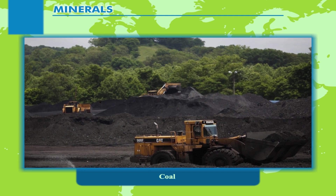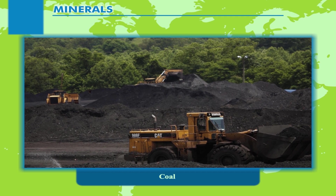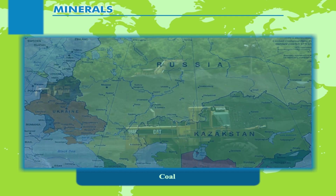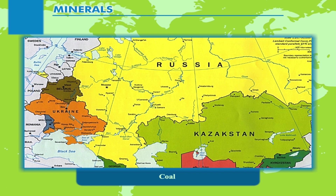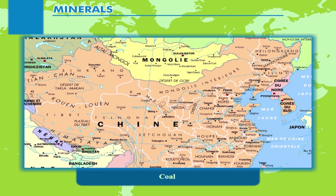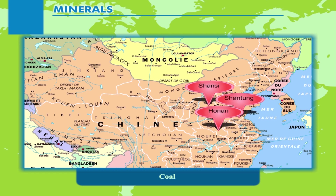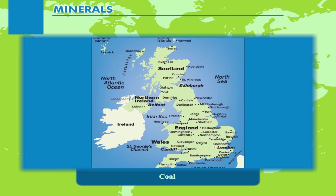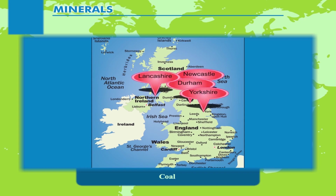The USA is the leading producer of coal in the world, but most of their coal is of bituminous quality. Russia is another very important producer of coal, with major coal fields in Siberia, the Urals, and the Moscow region. Ukraine is also a very important producer of coal. China produces a huge quantity of coal, with major coal mining states being Shanxi, Honan, Shandong, and Hunan. The UK produces high quality coal in Durham, Newcastle, Yorkshire, Lancashire, Derby, and South Wales.